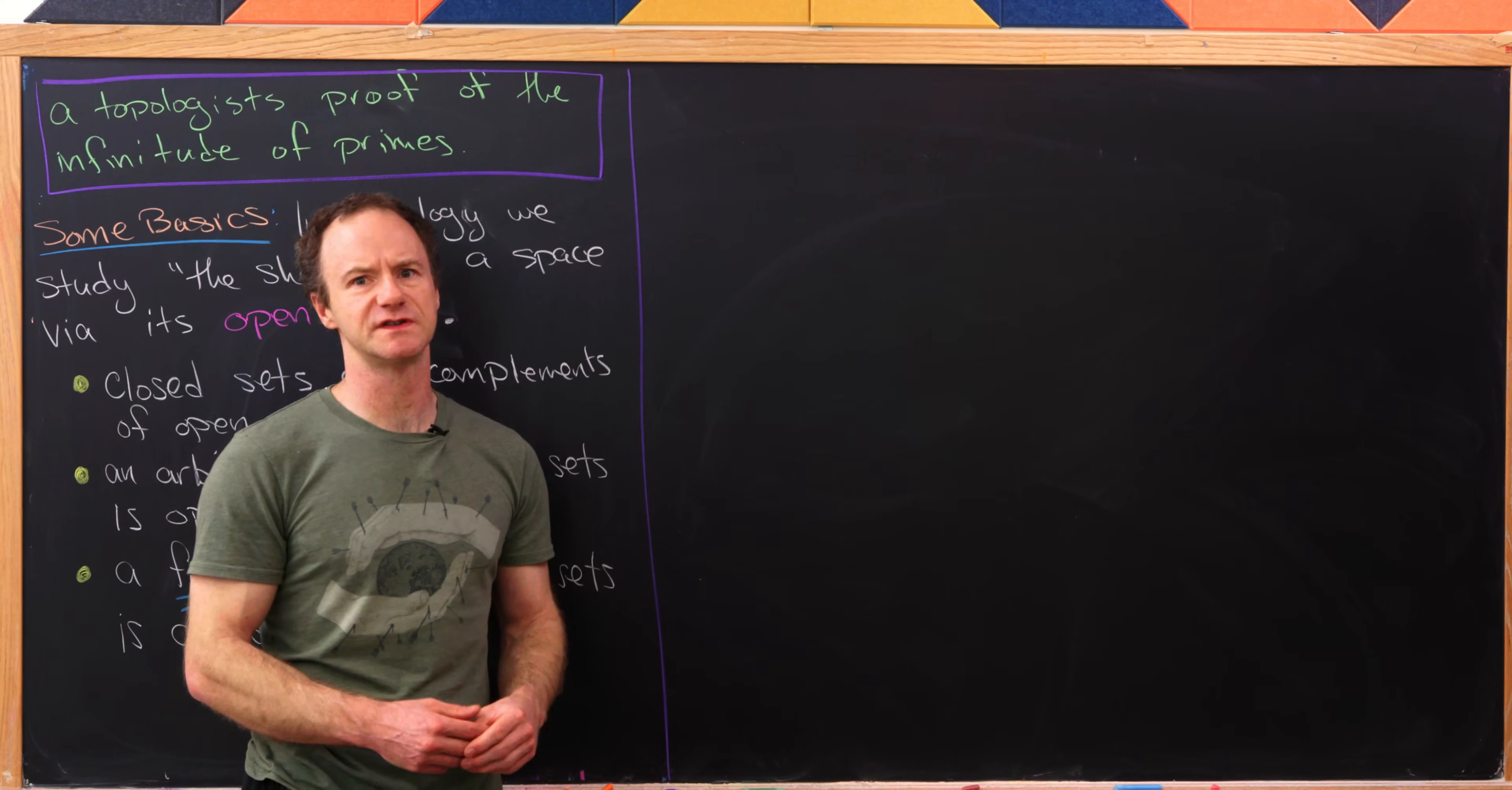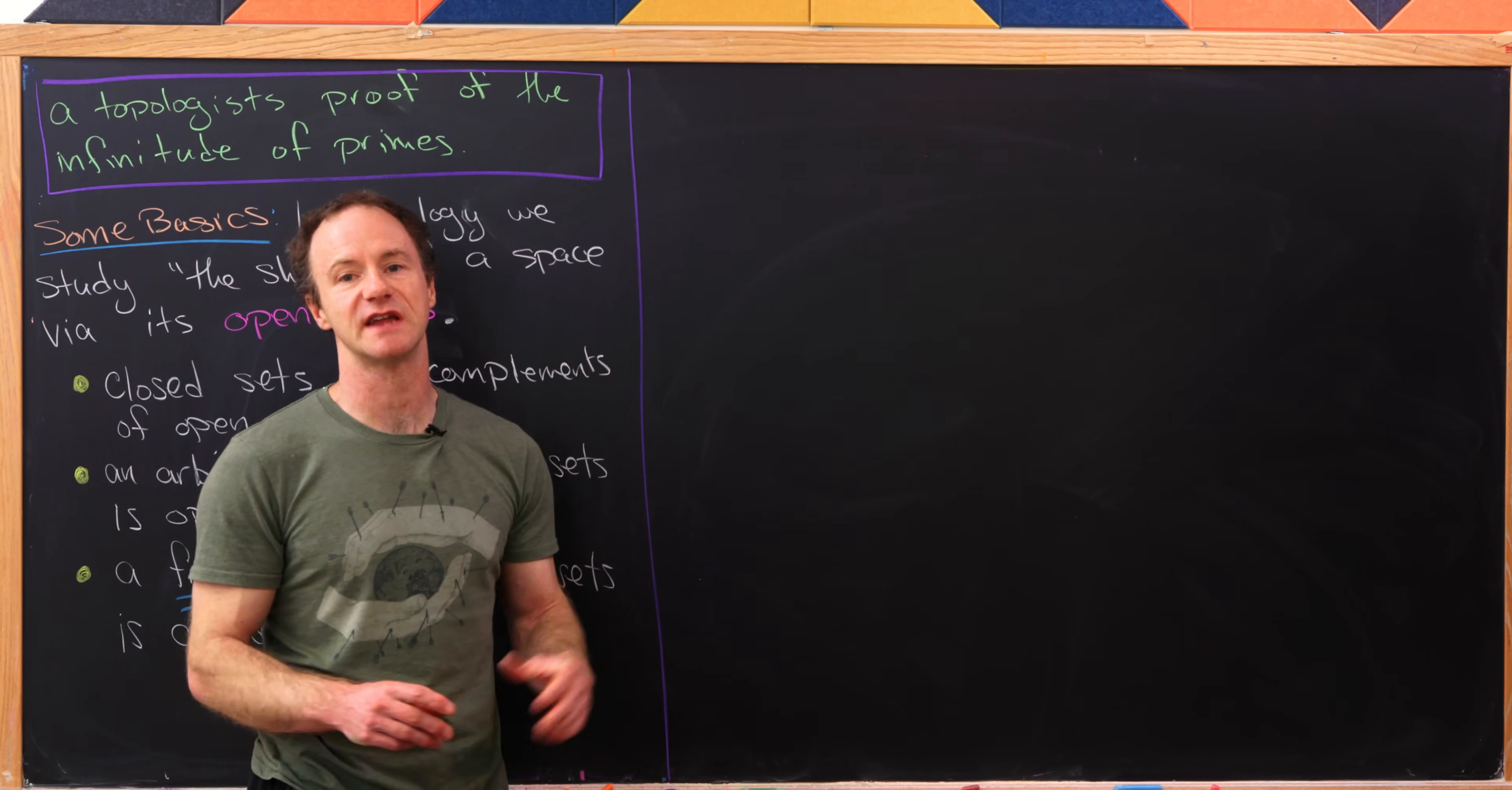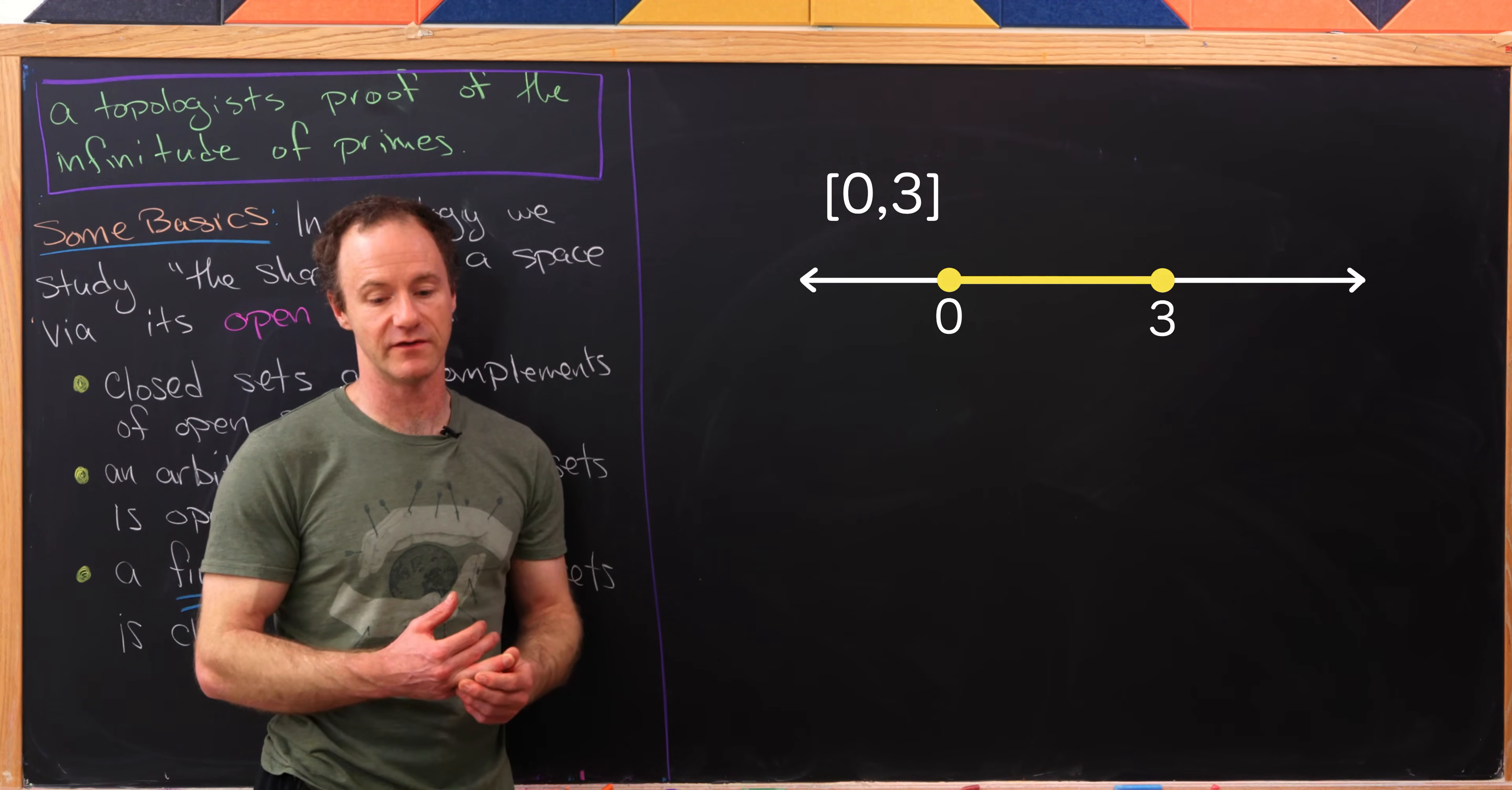And then what are some closed sets in this standard topology on R? Well, it's the standard topology, so we would hope that closed intervals would be closed, and in fact they are. And so the closed interval from 0 to 3, so that includes 0 and 3, is closed. And it can pretty easily be written as a complement of an open set.